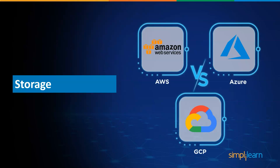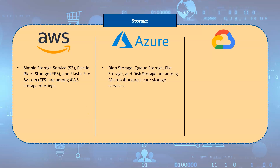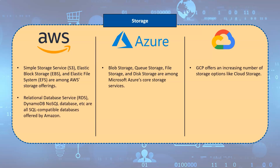Regarding storage, AWS offers Simple Storage Service for object storage, Elastic Block Storage for persistent block storage, and Elastic File System for file storage. Azure's core storage services include block storage for REST-based object storage of unstructured data, queue storage for large volume workloads, file storage, and disk storage. GCP offers an increasing number of storage options, including its unified object storage service Cloud Storage, which also has a persistent disk option.